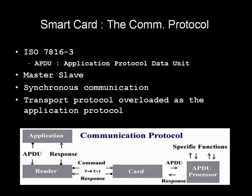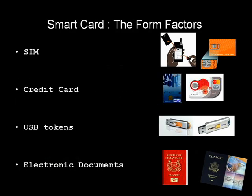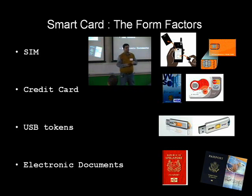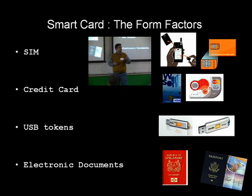Here is a picture showing how the command flow happens from a transport protocol perspective. There is an application which sends a command to a reader — I'll talk about what a reader is later. Through the reader it reaches the card, and the card has a software processor where it maps that command to a particular function. Smart cards actually have various forms. The most famous is the SIM card — everybody with a mobile phone has one. SIM is the backbone of the GSM industry in the sense that it authenticates you and your mobile equipment to the operator's network, and plays a major role in roaming.